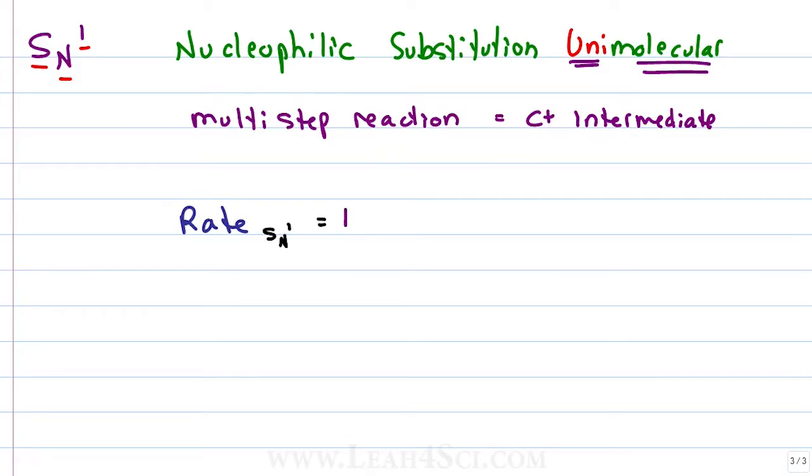The rate of an SN1 reaction is equal to some constant K times the concentration of the substrate. Notice that it's only the substrate we're taking into account not the nucleophile as we do with an SN2 reaction and this is going to be very important when we're understanding why we have a higher activation energy in the first step of the SN1 reaction.